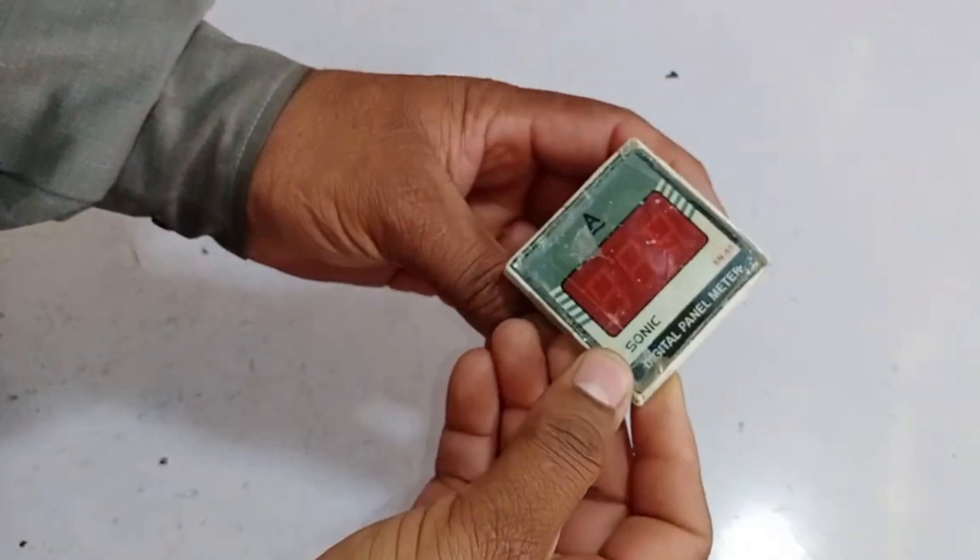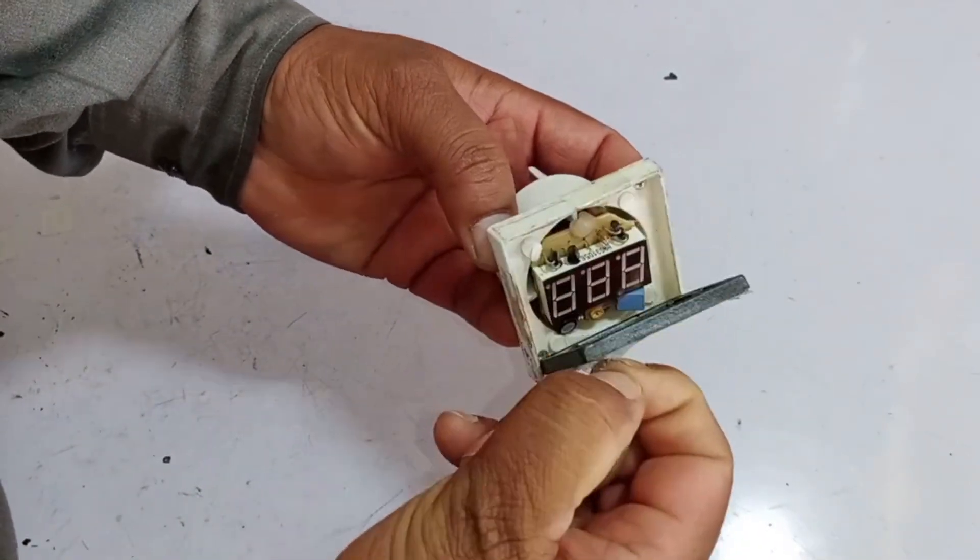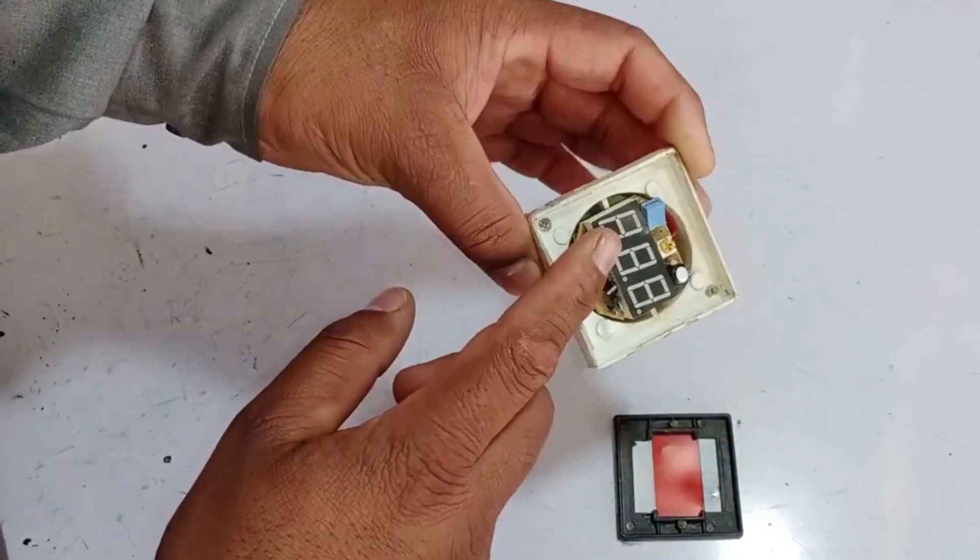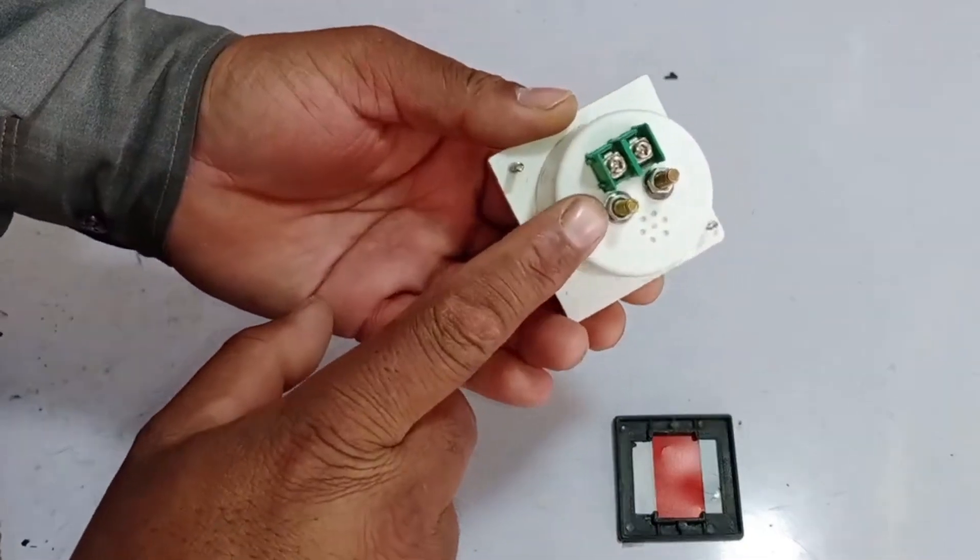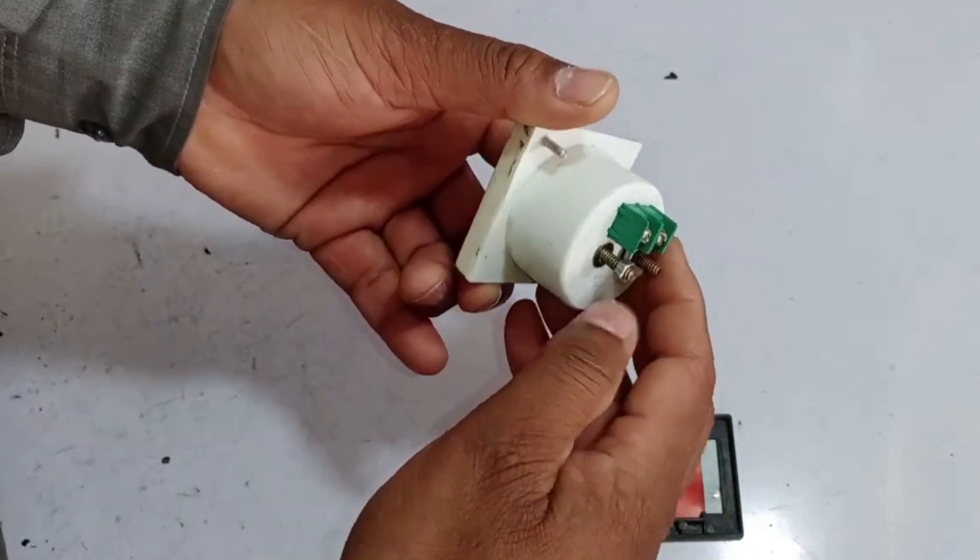To start the repair, the first step is to open the meter. The top cover can be easily removed. You can use any pin to gently push it, and it will come off. Now you can see the entire circuit at the bottom. To remove it, the easiest way is to unscrew the nuts holding it in place, which will also release the CT current transformer.